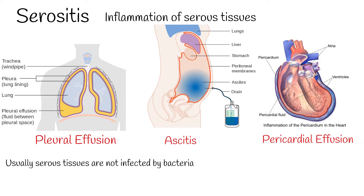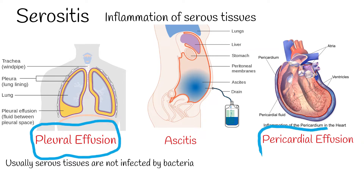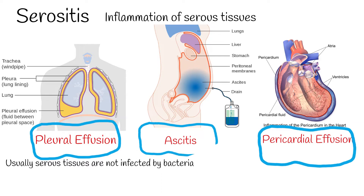Fluid accumulation in the pleura is called pleural effusion. Fluid accumulation in the pericardial sac is called pericardial effusion, and in the abdomen it is called ascites.